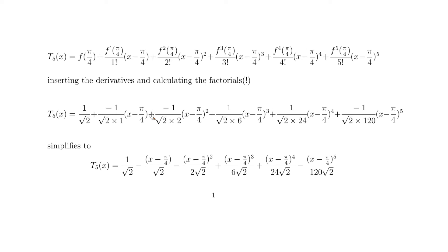The fourth term: the 1 cancels, leaving (x − π/4)³/(6√2). The fifth term: (x − π/4)⁴ goes to the numerator, and root 2 times 24 becomes 24√2 in the denominator. For the last term, the minus sign flips to give minus, the 1 cancels, and root 2 times 120 becomes 120√2.